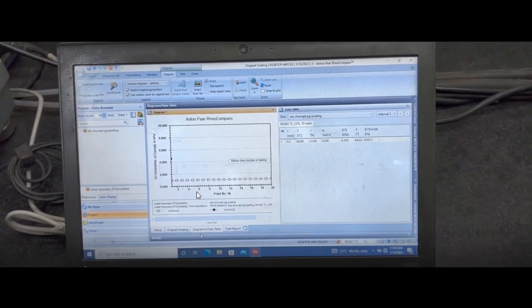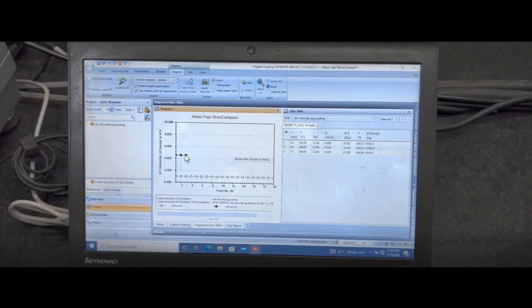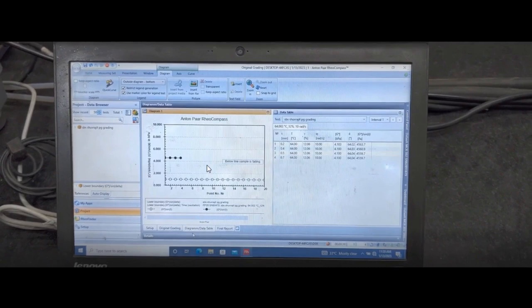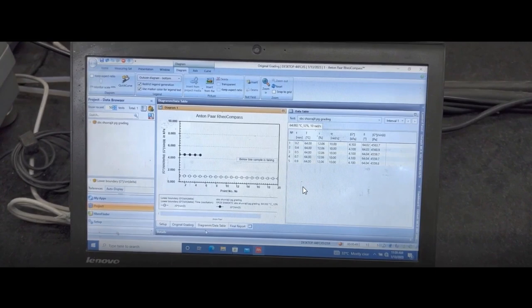The last column gives you G*/sin(δ), and simultaneously you get all these points on the graph. Now this is the target value, 1 kPa, but actual G*/sin(δ) at a temperature of 64 degrees Celsius are here by 5 black dots. There will be 20 readings and all these values are reported in this table. So you will have 20 such data, and at the end of the experiment in this table you will get average values.